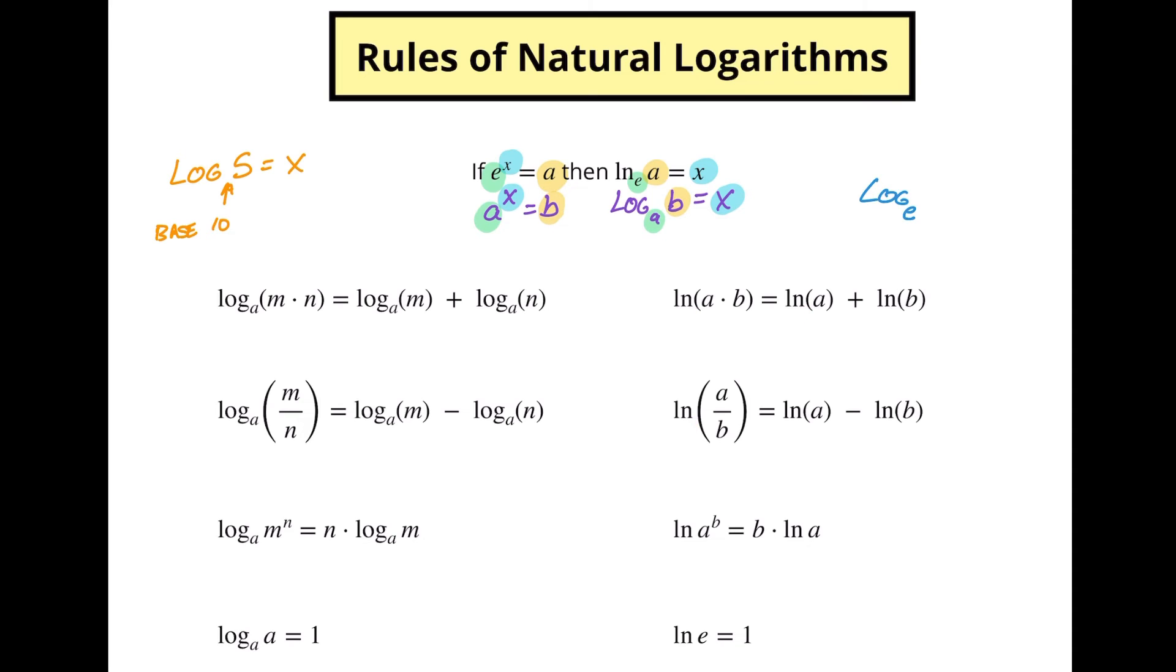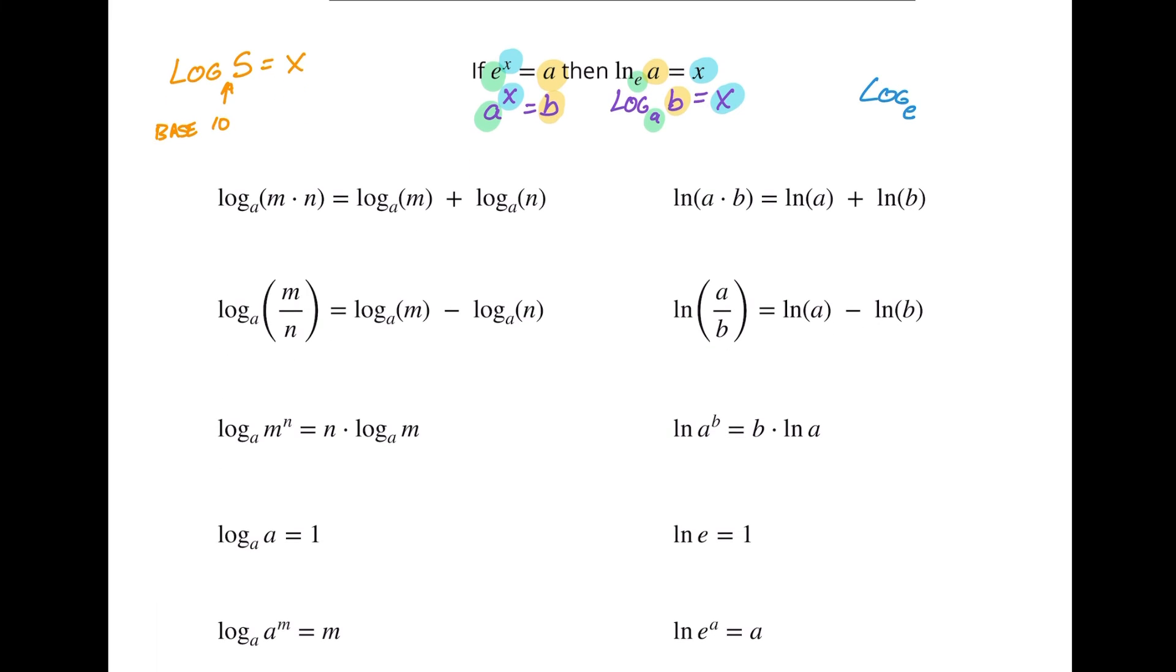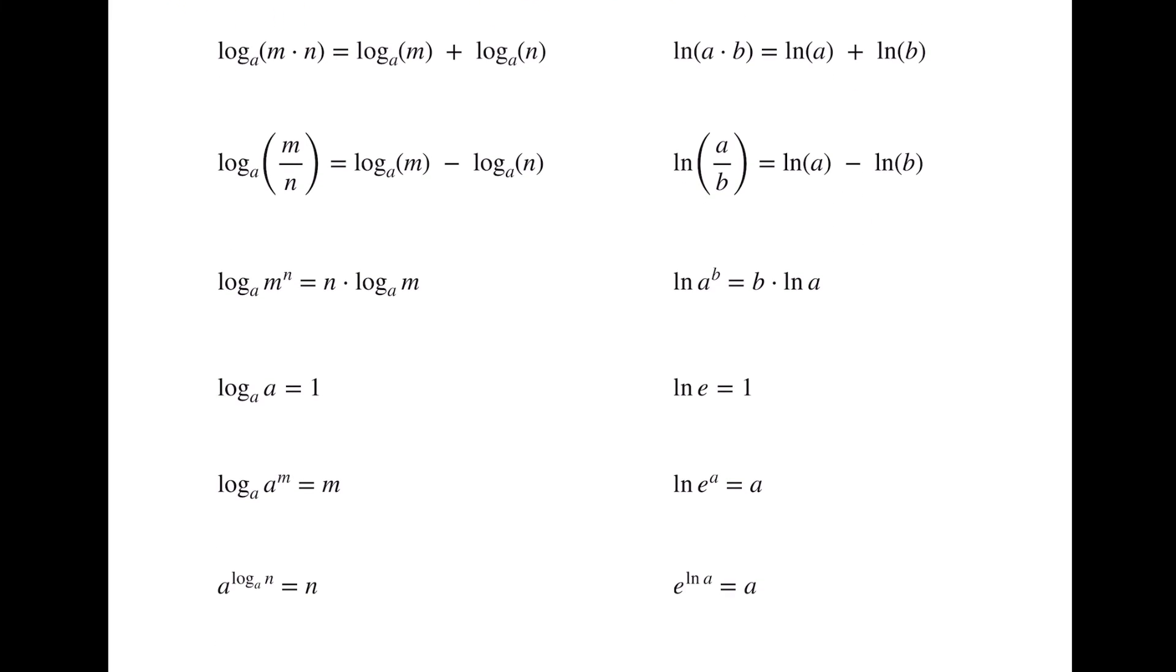Here if we're multiplying two numbers together, we're going to add those two individual logarithms. Here if we're multiplying two numbers together, we're going to add those two natural logarithms. Here if we're dividing, we're going to subtract the logarithms. Here if we're dividing, we're going to subtract the natural logarithms. And you can see that this progresses for all of our rules of logarithms.